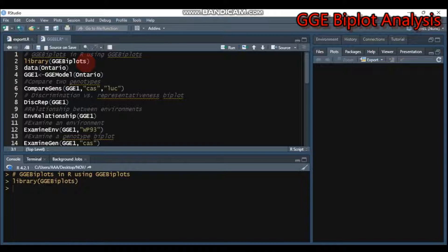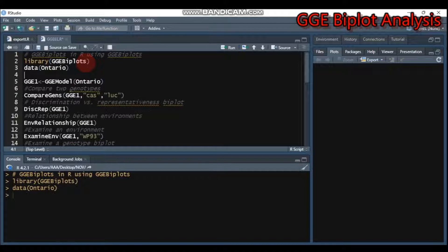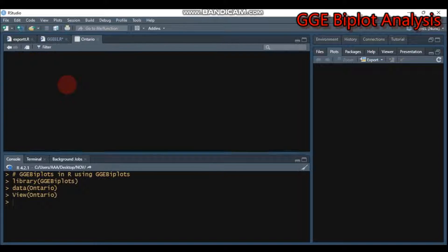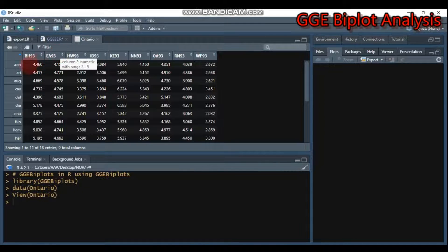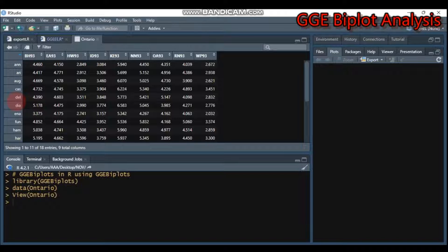For the sake of this tutorial, we will use the data named Ontario. You can call that data, and as all of you know, if you want to check or view the data, just type this and send it to R Studio. You'll get nine different environments starting from BH93 to WP93, and there are 18 cultivars or genotypes.